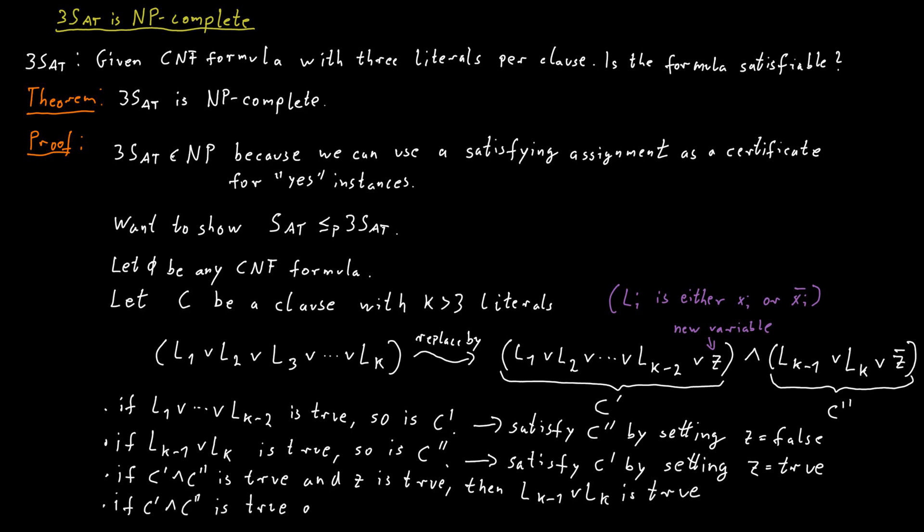And if z is false, then C' is not satisfied by z alone. But since both of these clauses have to be satisfied in a satisfying assignment, we know that one of the literals, L1 to Lk, must have the correct value, must be true.